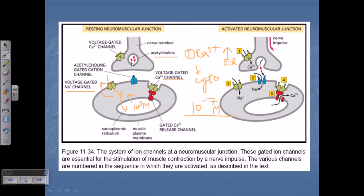During neuromuscular transfer, voltage plays a very important role because lots of action potentials are generated. When an action potential is generated, calcium from outside the nerve cell starts to invade and enter the nerve cell. This triggers fusion of acetylcholine vesicles with the nerve terminal, and acetylcholine is released. The acetylcholine then goes and attaches with the sodium channel.